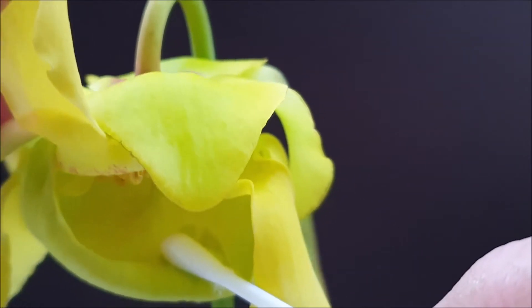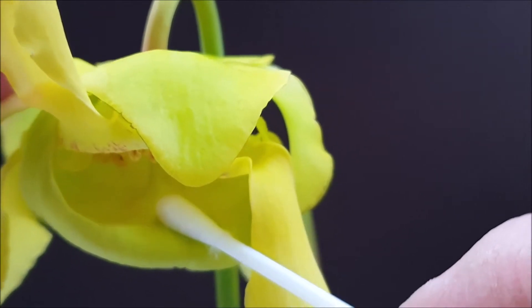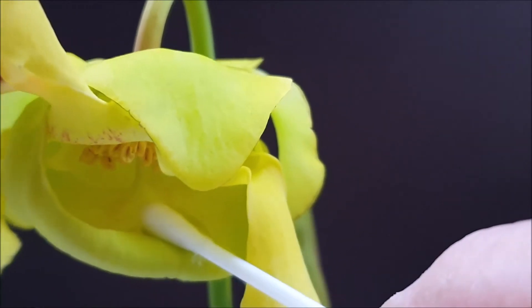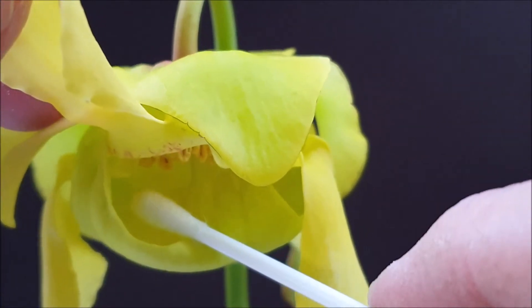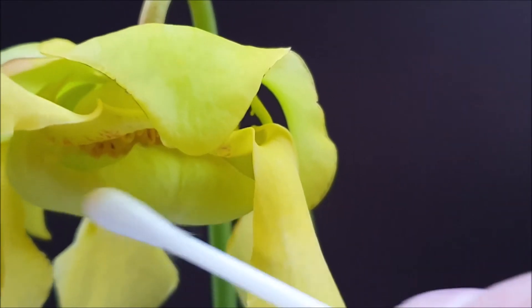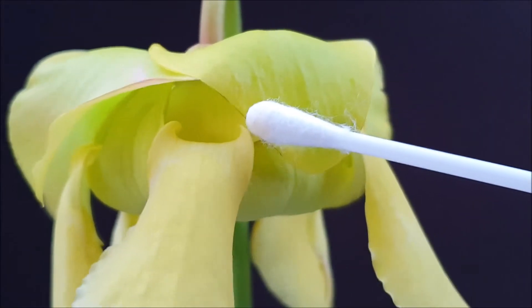Pollen lands on the bottom part of the style, which attracts the bees. And once the bees are finished collecting the pollen, they crawl out from underneath the petal through this part over here. See, there's a bit of a gap here.